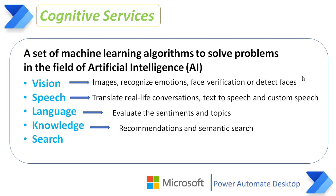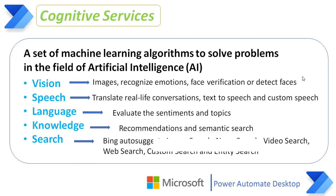Now we will learn about search cognitive services. Search cognitive services help to integrate rich search results into your application, including Bing Autosuggest, Bing Image Search, Bing News Search, Bing Video Search, Bing Web Search, Bing Custom Search, and Bing Entity Search. These are all the cognitive services available in Power Automate Desktop.